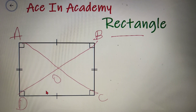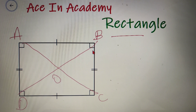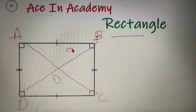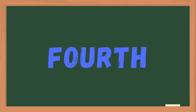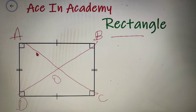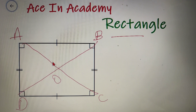The third property of a rectangle is that, unlike a square, the diagonals do not bisect the angles at the vertices. If I name this angle as X and this angle as Y, then X is not equal to Y. The fourth property is that the diagonals of a rectangle are not perpendicular to each other — so unlike a square, the diagonals are not perpendicular.